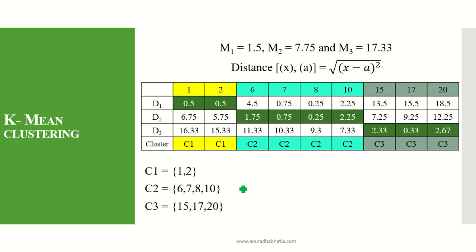The final three clusters are: C1 = {1, 2}, C2 = {6, 7, 8, 10}, and C3 = {15, 17, 20}. If we had considered the value 6 in cluster C2 from the first step, we would have gotten the answer in the second step instead of taking an extra step. This is how we obtain three clusters using the Euclidean distance method for K-Mean clustering. Thank you.